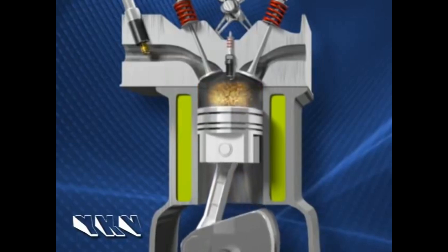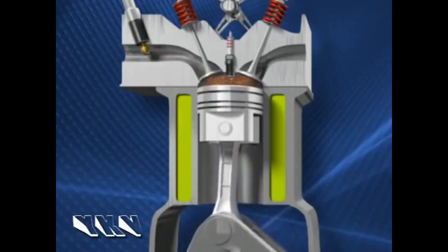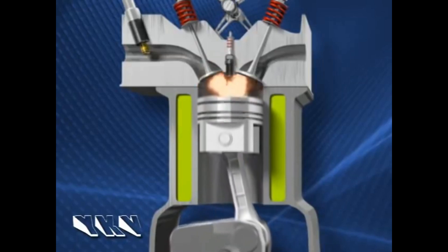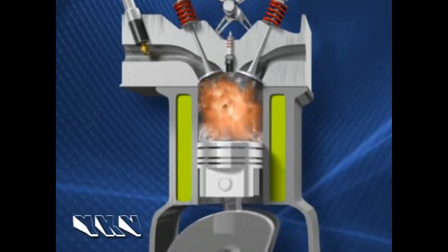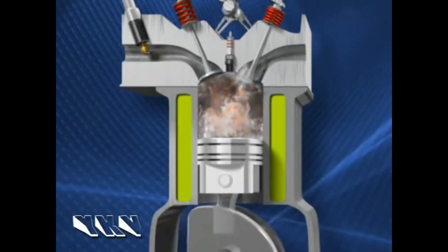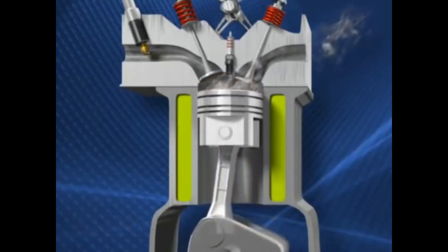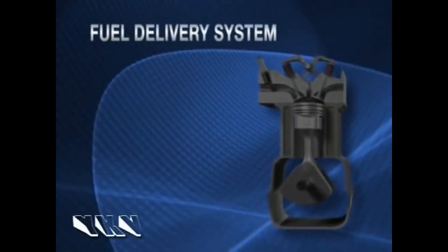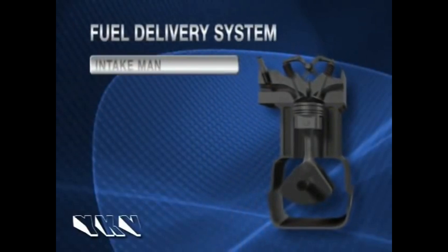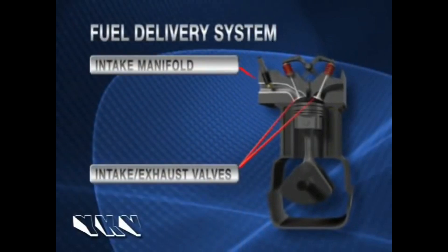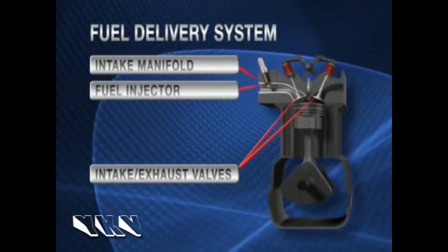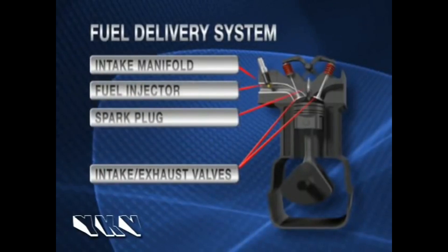To propel that piston, we need to ignite a tiny bit of gas and a whole lot of air. This creates expansion inside the cylinder. The fuel delivery system consists of an air intake manifold, valves — intake and exhaust — a fuel injector, and a spark plug.